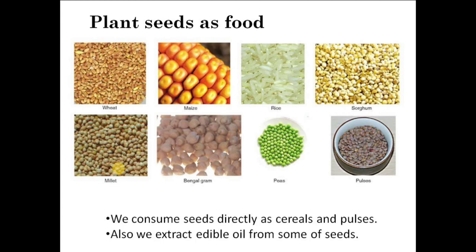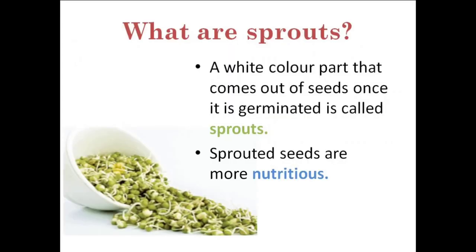We either consume these seeds in the form of cereals or pulses. We also consume some seeds as spices, and we obtain oil from seeds which is used for cooking. Sometimes we eat raw seeds in the form of sprouts. A sprout is the white-colored part that comes out of a seed once it is germinated. Germinated seeds are very nutritious. To germinate a seed, you need proper conditions — air, water, and humidity. If all three conditions are met, the seed will germinate and produce a sprout.